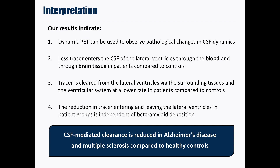Our results indicate that dynamic PET measures can be used to observe pathological changes in CSF dynamics. From our complemental modeling analysis, we see that less tracer enters the lateral ventricles through the blood and through the brain tissue in Alzheimer's disease compared to controls, and that tracer is cleared from the lateral ventricles at a lower rate in patients compared to controls. Our results also indicate that the reduction of tracer entering and leaving the lateral ventricles in patient groups is independent of beta-amyloid deposition, as indicated by the PET results from the multiple sclerosis data set, which is not expected to have significant beta-amyloid accumulation. Altogether, these results indicate that CSF-mediated clearance is reduced in Alzheimer's disease and multiple sclerosis compared to healthy controls.